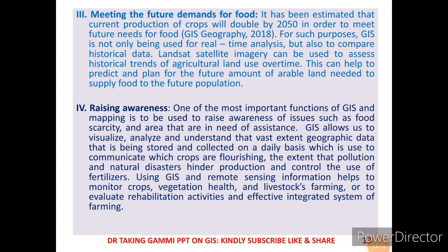The fourth application of GIS is raising awareness. One of the most important functions of GIS and mapping is to raise awareness of issues such as food scarcity and areas in need of assistance. This allows us to visualize, analyze, and understand the vast exchange of geographic data collected daily, which is used to communicate which crops are flourishing, the extent of pollution and natural disasters that hinder production, and to monitor crops, vegetation health, and livestock farming using GIS and remote sensing.